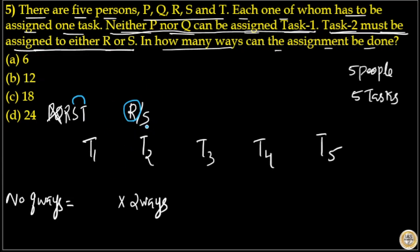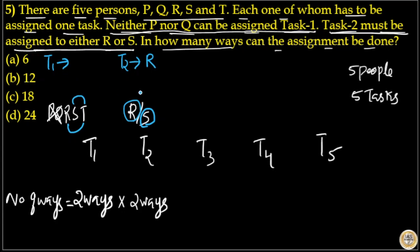If task 2 is assigned to S, then task 1 can be completed by R or T — again 2 ways. So in both cases, only two people are available for task 1, giving 2 ways. In both conditions, task 1 can be assigned to two people, so the number of ways is 2.